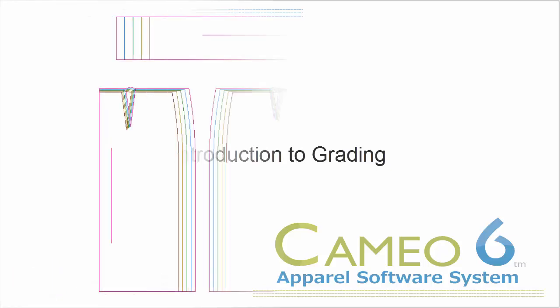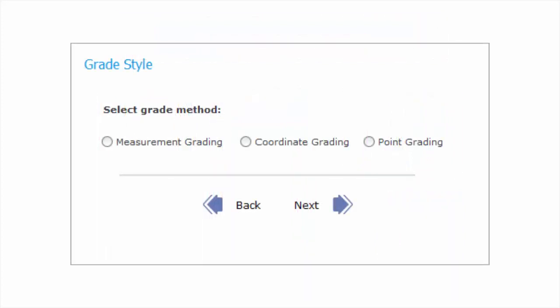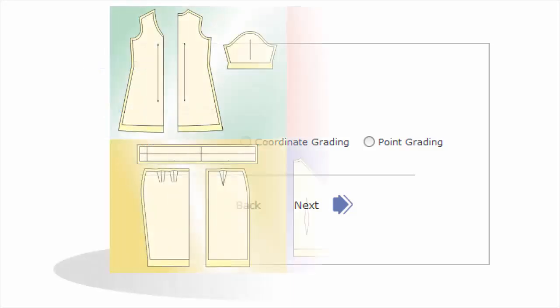Grading is the process used to stretch or shrink sample size patterns to create larger and smaller sized patterns. CAMEO provides three methods for grading patterns: measurement, coordinate, and point.